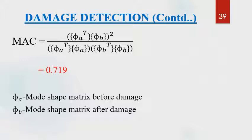MAC (Modal Assurance Criterion) is a scalar quantity that is the dot product of vectors for quantitative comparison between data sets of mode shapes. Its value ranges between 0 and 1, where 0 indicates no correspondence and 1 indicates perfect correspondence. The MAC value was found to be 0.719 when comparing mode shapes before and after the damage of the plate, indicating that there is some damage in the structure, as the damaged mode shape differs from the undamaged one.